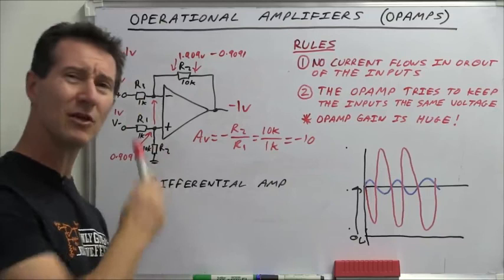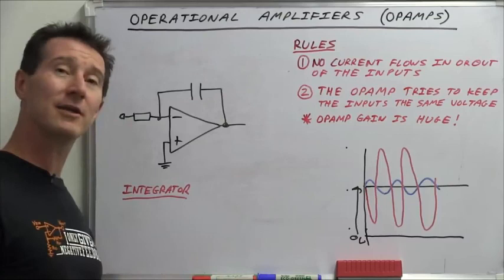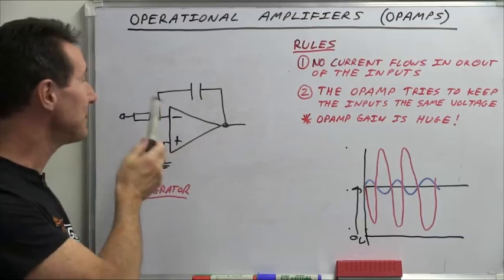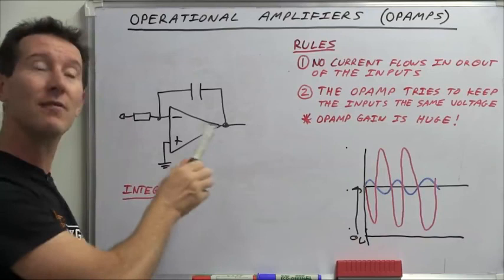And just briefly, another one of these tricky configurations goes back to the name, the operational amplifier, and one of those mathematical operations, the integrator. It won't go into integrals and all that sort of stuff. But what we can do, basic inverting configuration here, except instead of a feedback resistor, we have a feedback capacitor.